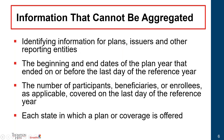The information that cannot be aggregated is generally plan-specific information — information on the plan, the issuers, and the reporting entities, the beginning and end dates of the plan year on or before the end of the reference year. The reference year is the calendar year, so reporting will be done on a calendar year basis even if you have a non-calendar year plan. You also have to report the number of participants, beneficiaries, or enrollees covered on the last day of the reference year, and each state in which the plan or coverage is offered. As a group health plan, you'll generally have this information and it should be relatively easy to obtain.